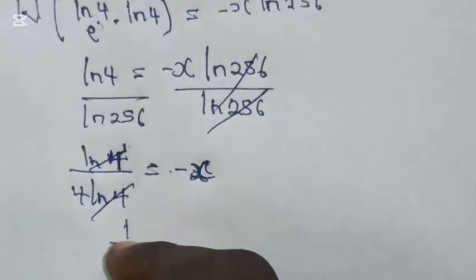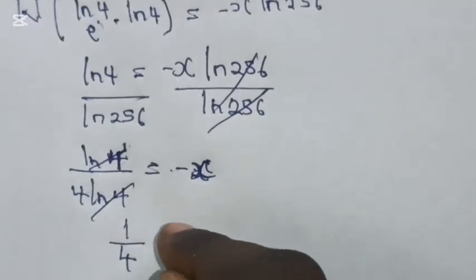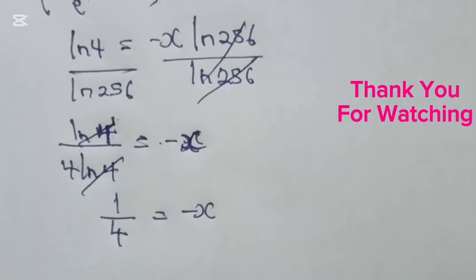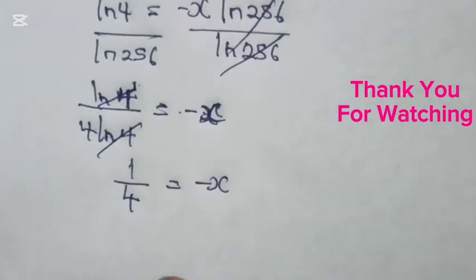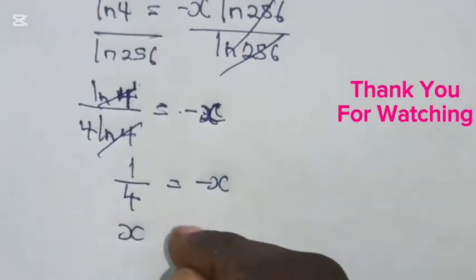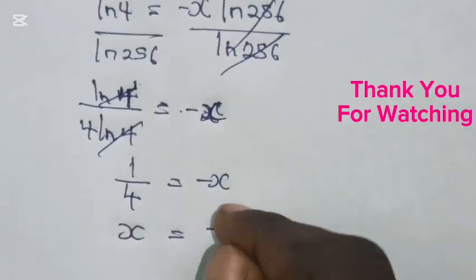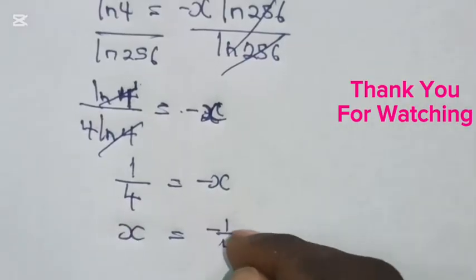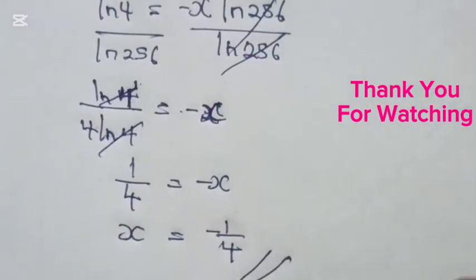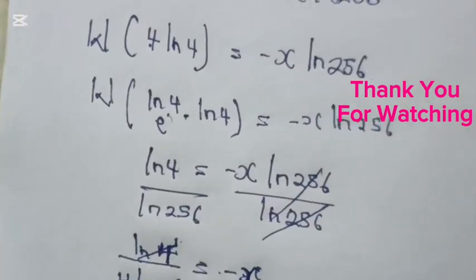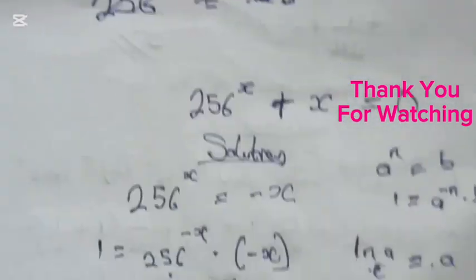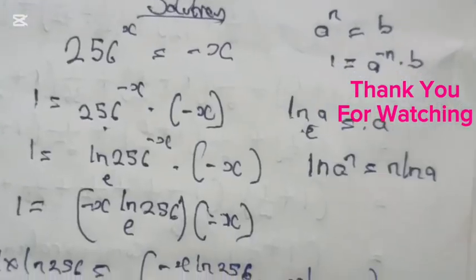Multiplying both sides by minus 1, we get x equals minus 1 over 4, which is our final answer. Please don't forget to like, share, and subscribe to my channel. Thank you.